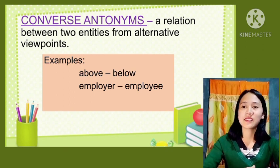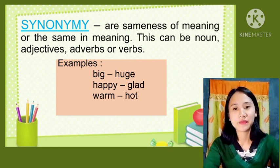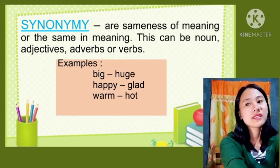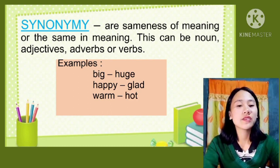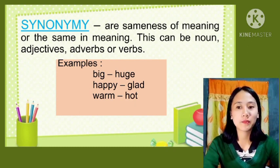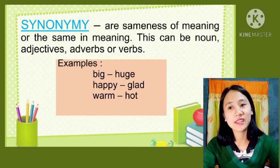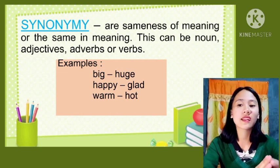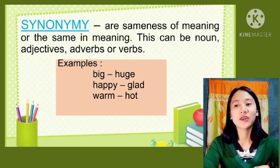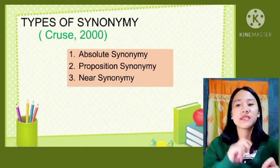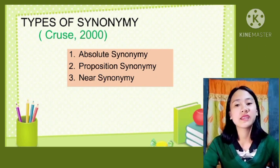Now let's go to the second lexical relation: synonymy. Synonymy refers to words that have sameness of meaning. These can be nouns, adjectives, adverbs, or verbs. For example, the word 'big' and its synonym 'huge'; also 'happy', 'glad', 'warm', and 'hot'. According to Cruz (2000), there are three types of synonyms: absolute synonyms, propositional synonyms, and near synonyms.